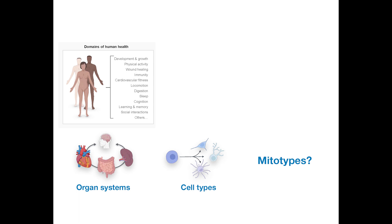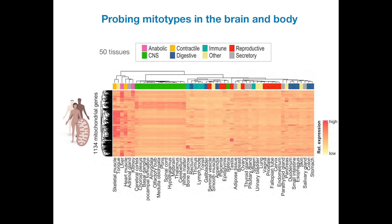So how do we probe mitotypes in the brains and body? We're bound by the constraints of reductionism — the little pieces of a person or system we can break down. Using a big data set of gene expression from 50 different human tissues, we looked at 1,143 specifically mitochondrial genes from post-mortem tissue samples and asked: are mitochondria the same across the whole human body or are they different — in the liver, in the brain, in different parts of the brain, in the heart? Each row is a different mitochondrial component and each column is a different tissue. This shows that there are different types of mitochondria.